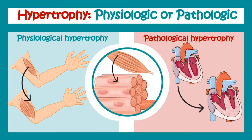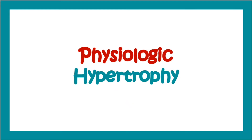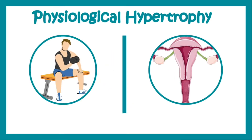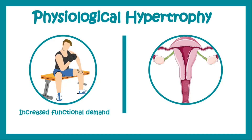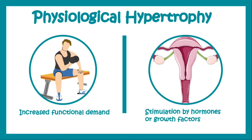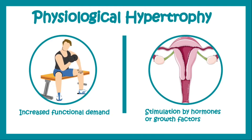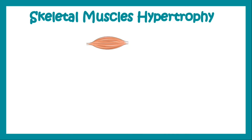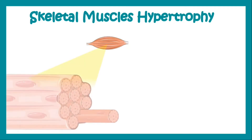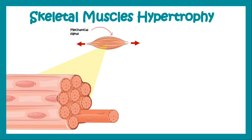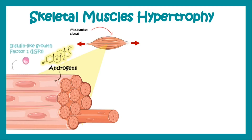Now let's talk about physiological hypertrophy. Physiological hypertrophy can be due to increased functional demand, as in the case of a bodybuilder doing exercise, or in the case of stimulation by hormones or growth factors — that occurs in the uterus during pregnancy. Skeletal muscle hypertrophy occurs due to multiple factors including mechanical signals like stretch, androgens, or action of insulin-like growth factor 1.